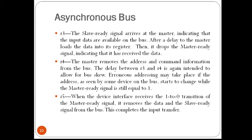Erroneous addressing may take place if the address seen by some device on the bus starts to change while the master ready signal is still 1, causing the slave device to decode the wrong address — resulting in errors. At clock T5, when the device interface receives the 1-to-0 transition of the master ready signal, it removes the data and the slave ready signal from the bus. The arrow marks in figure 4.27 indicate what is happening at each point in time. This indicates the completion of an input transfer.